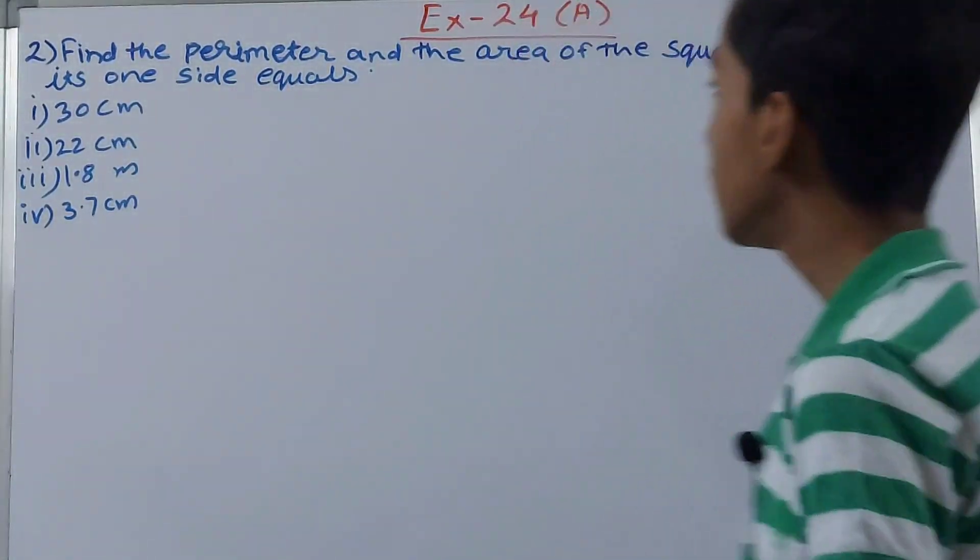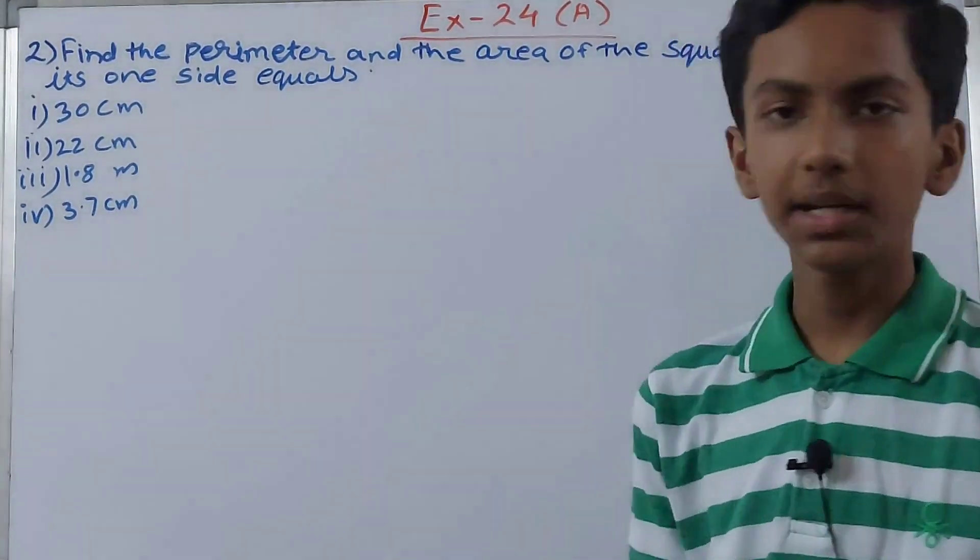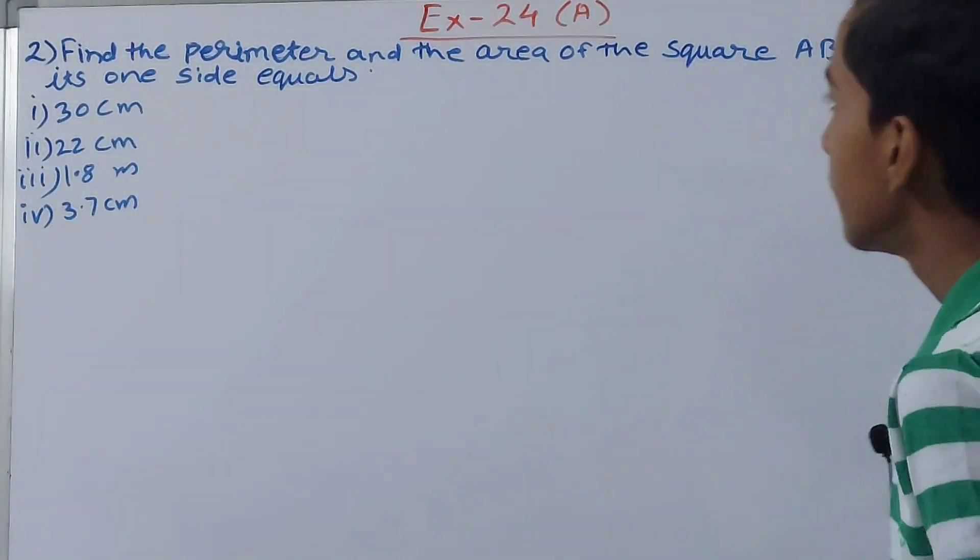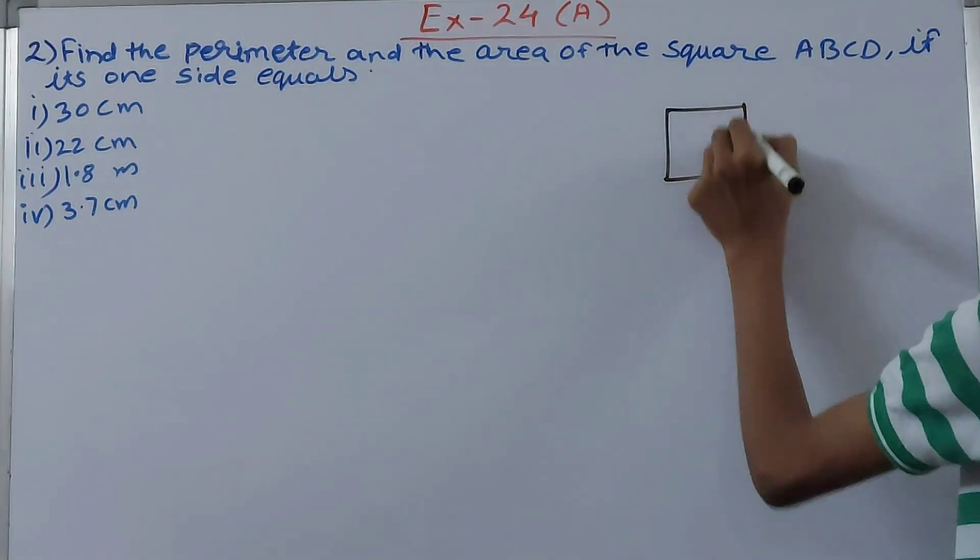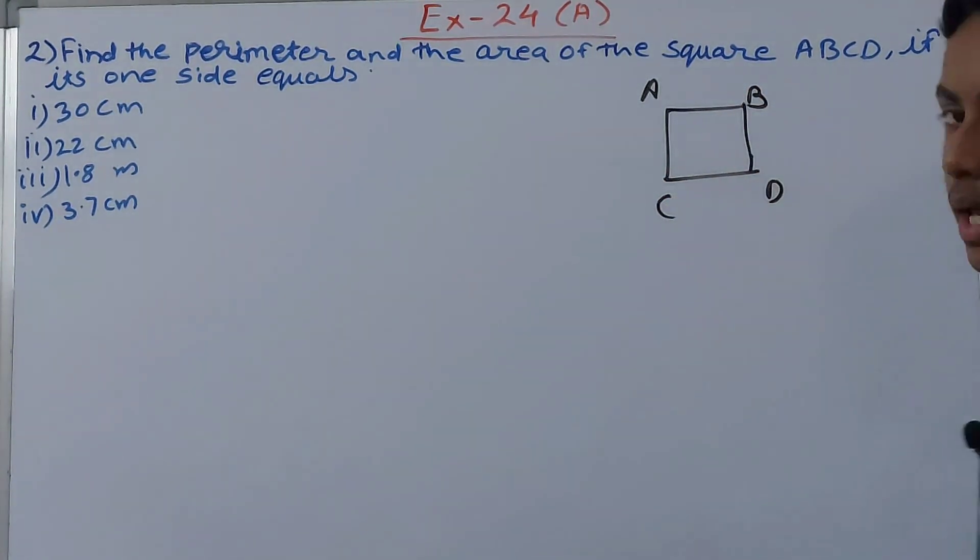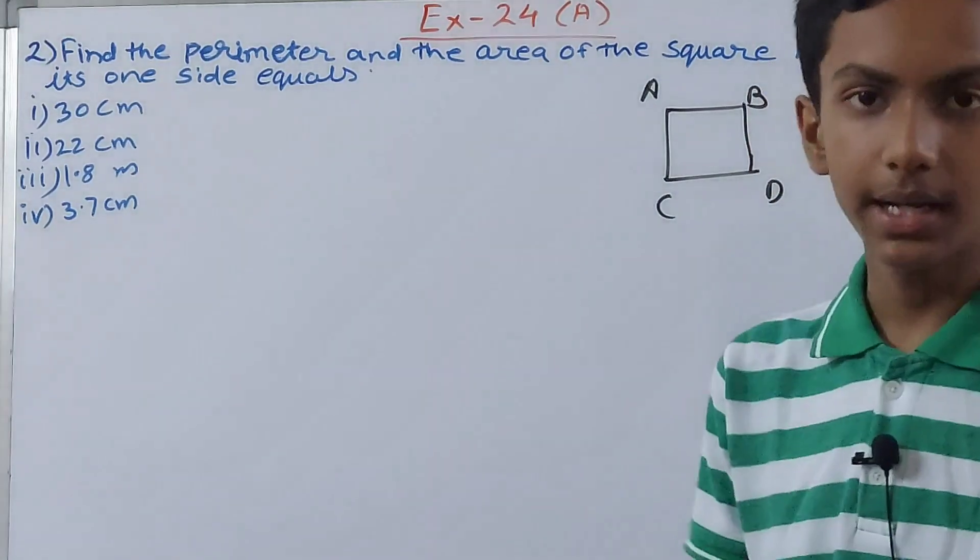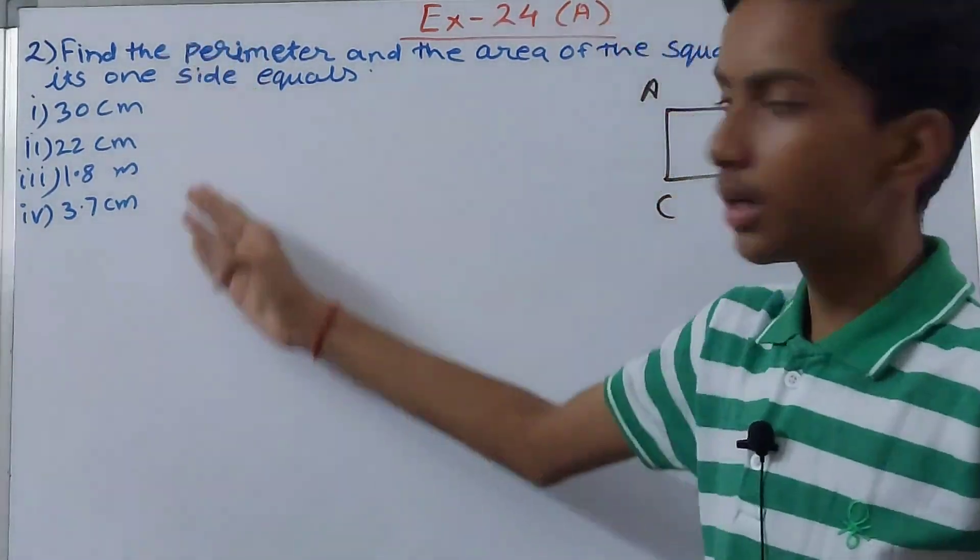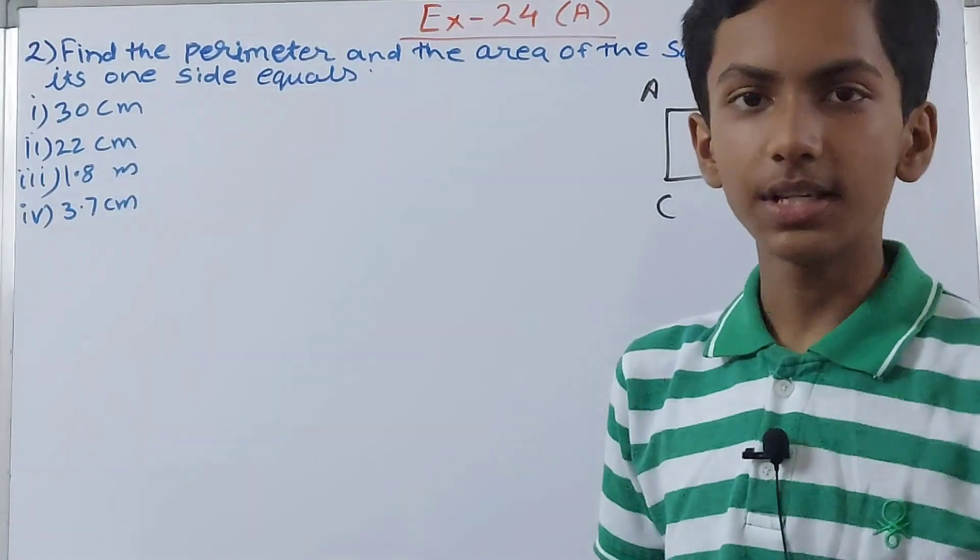This question asks to find the perimeter and the area of the square ABCD if its one side equals. So basically they are telling if this is our square ABCD. They have given the length of its side. There are four cases here, and basically these are the lengths of the square in four different cases.